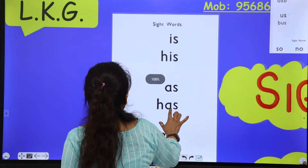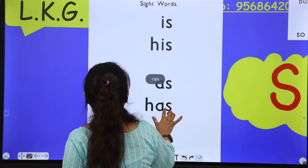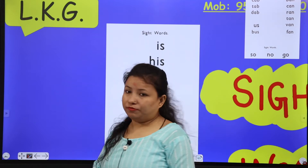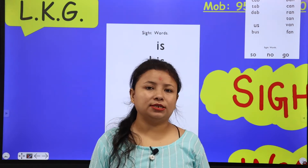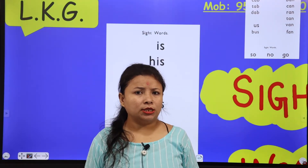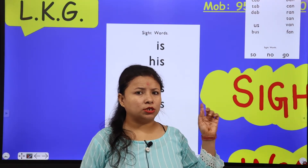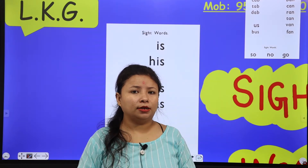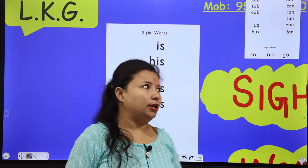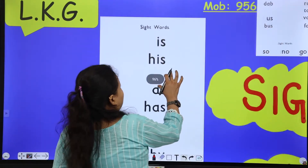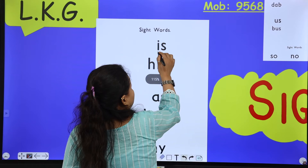Sight means to see. When you read sentences, you will see that these words come again and again — like 'is.'